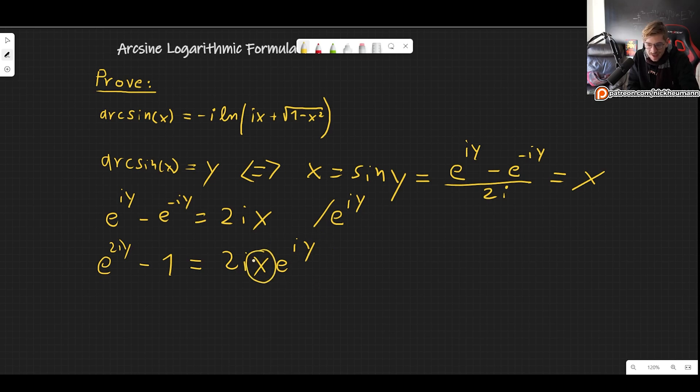And we have x, we have y, we have 2. So I'm going to write it to make this very suggestive. So e to the 2iy minus this part.